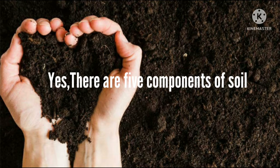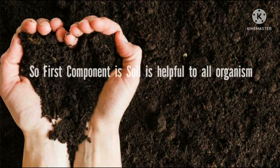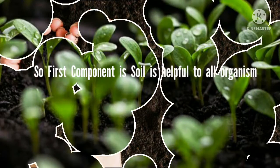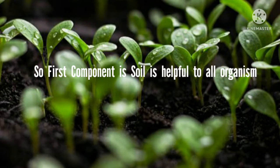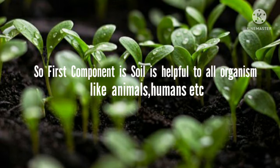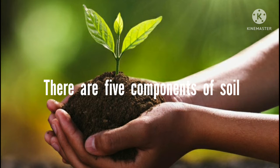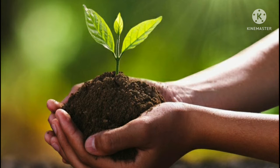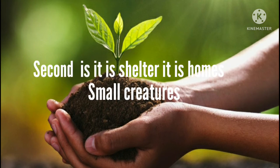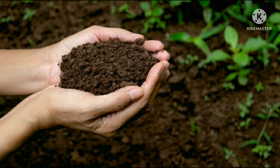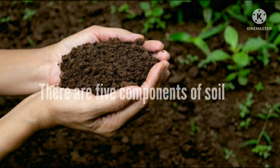There are five components of soil. The first component: soil is helpful to all organisms like animals, humans, etc. The second component: soil is a shelter, it is the home of small creatures.